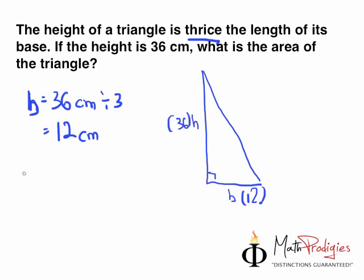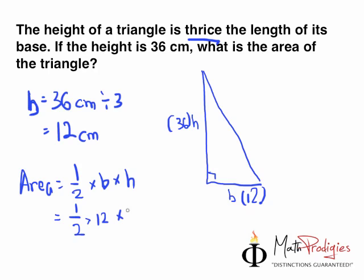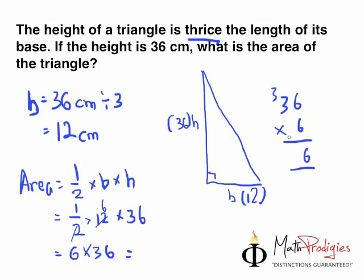Now, how do you find the area? The area equals half times base times height. The base is 12 and the height is 36. So you cancel the 2 — 12 divided by 2 gives 6. The answer is 6 times 36. Let's calculate: 6 times 6 is 36, 6 times 3 is 18, plus 3 equals 21. Hence, the answer is 216 cm squared. That is the answer for this question.